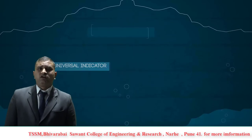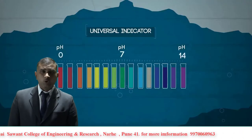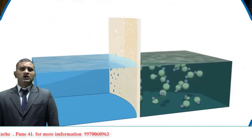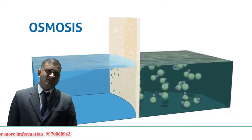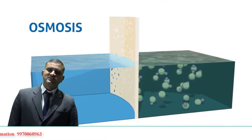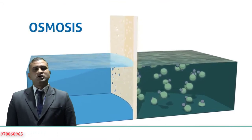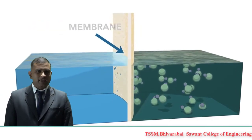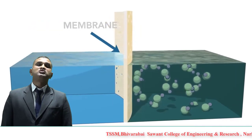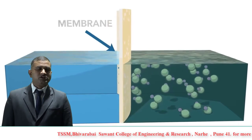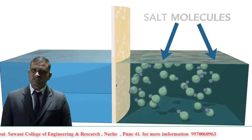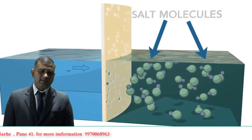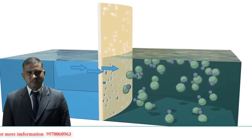To treat water for this property, we use the reverse osmosis process. Reverse osmosis is a process where you demineralize or deionize water through a semi-permeable reverse osmosis membrane. To understand the purpose and process of reverse osmosis, you must first understand the process of osmosis.